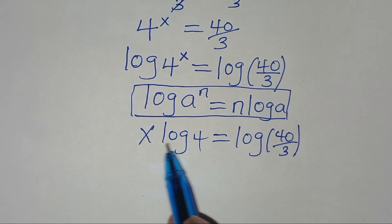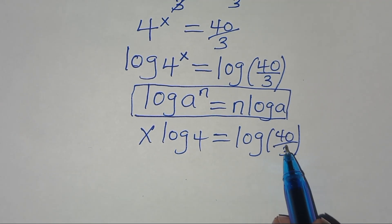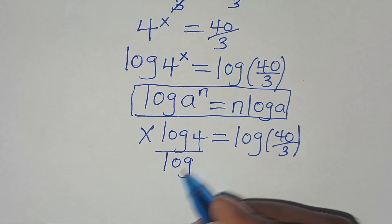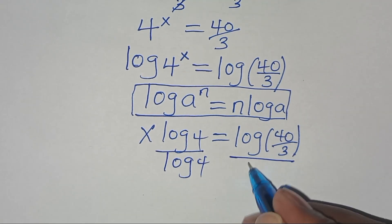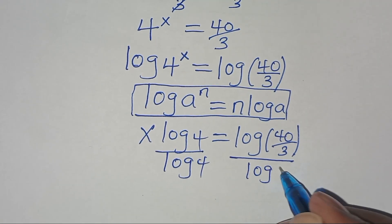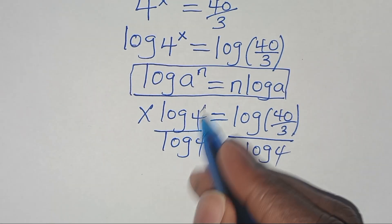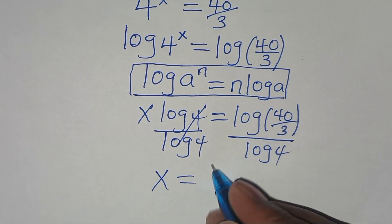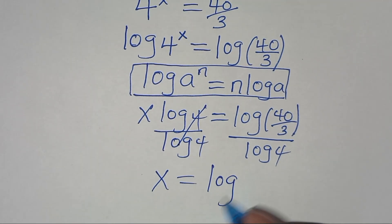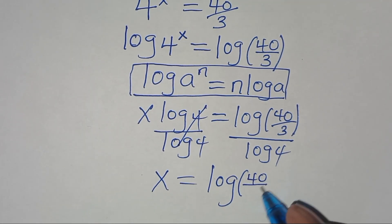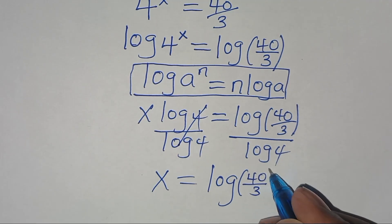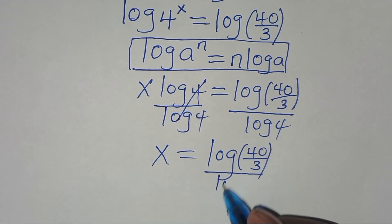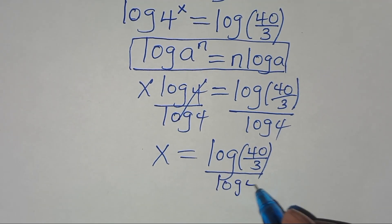The next step from here, we divide both sides by log(4), so that now we have x is equal to log(40 over 3) divided by log(4).